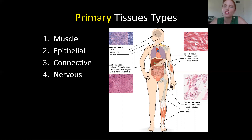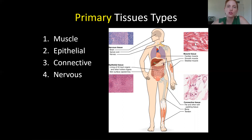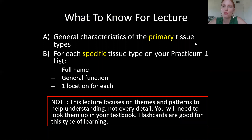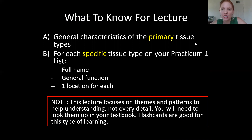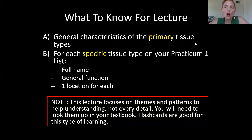We're going to look at the characteristics of those primary tissue types, and then you'll fit the specific tissue types into those primary categories. I want to be explicit about what I'm looking for, because there is a lot of information in these coming lectures, and I want to give you a framework to understand it.